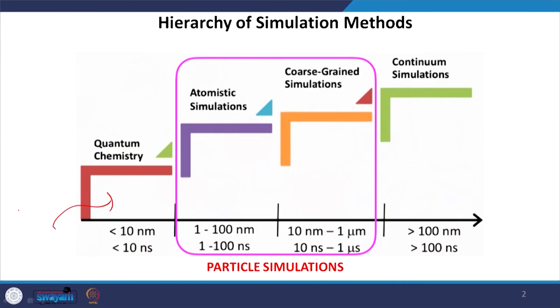Compared to other methods, quantum chemistry essentially solves the Schrödinger equation, looking at the density of electron clouds — not only the motion of nuclei but also the motion of electrons. Quantum chemistry is the most accurate method; many phenomena like chemical reactions are driven by electron cloud interactions. By modeling electron cloud density, chemical reactions can be represented in quantum chemistry simulations, which is not possible in classical atomistic or coarse-grained particle simulations.